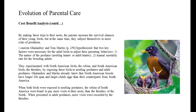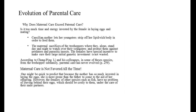Gallenberg and Martin already knew that North American robins have a longer lifespan and larger clutch of eggs than their counterparts from South America. When both birds were exposed to nestling predators, the robins of South America were found to pay more visits to their nests than the thrushes of the North. When presented with adult predators, more visits were recorded by the thrushes.